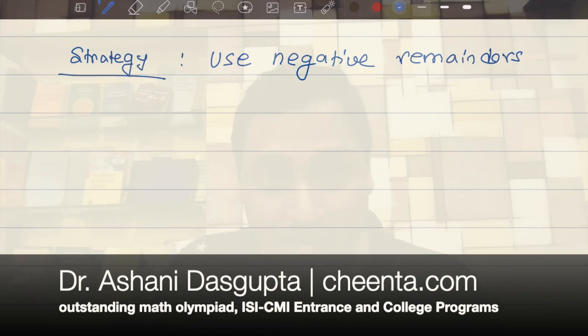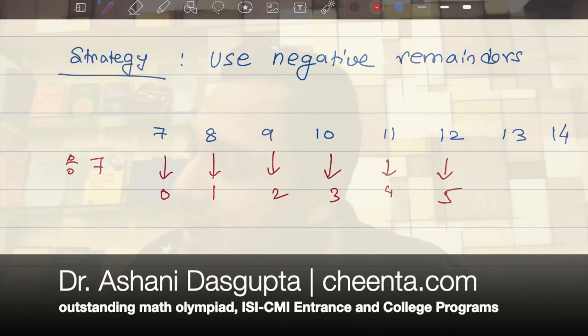So if I take the numbers, let's say 7, 8, 9, 10, 11, 12, 13, and 14. And let's compute the remainders when we divide by 7. If I divide by 7, the remainders are 0, 1, 2, 3, 4, 5, 6, and again 0.